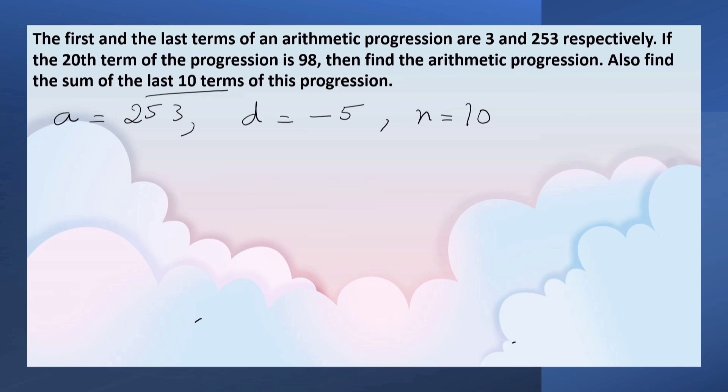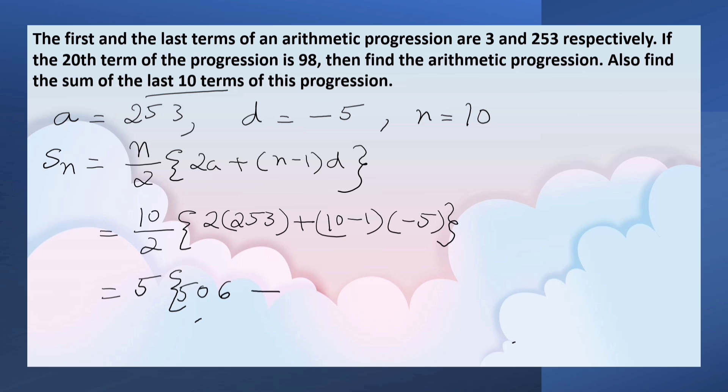Let's find the sum of N terms by using the formula. SN equals N by 2 times 2A plus N minus 1 times D. Here N is 10 by 2, 2 times A is 253 plus N is 10 minus 1. D is negative 5. 10 by 2 is 5. 2 times 253 is 506. 9 times minus 5.